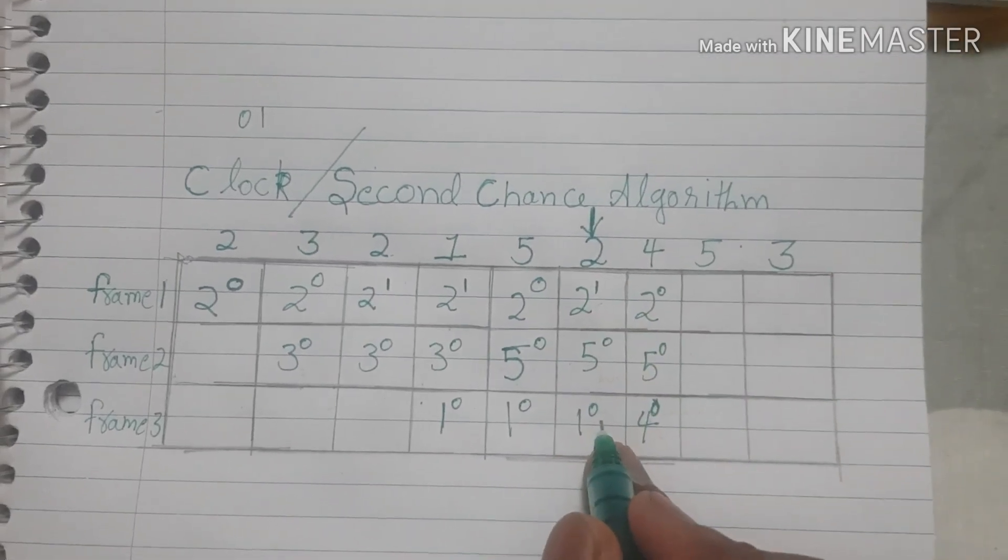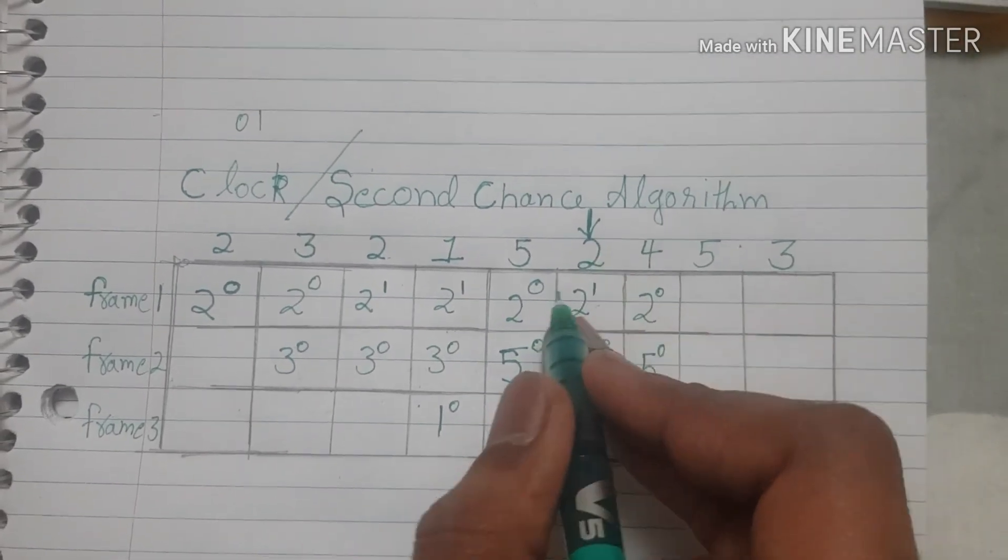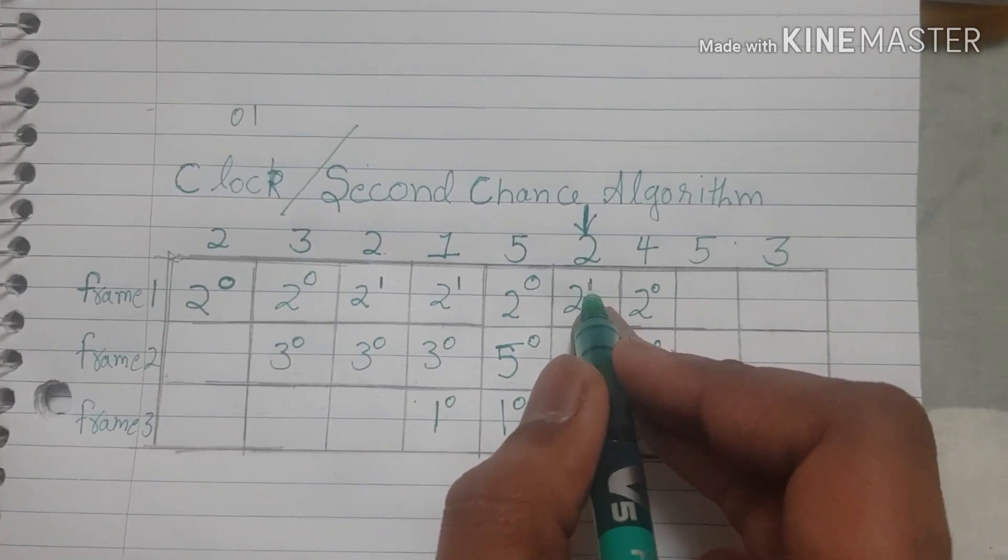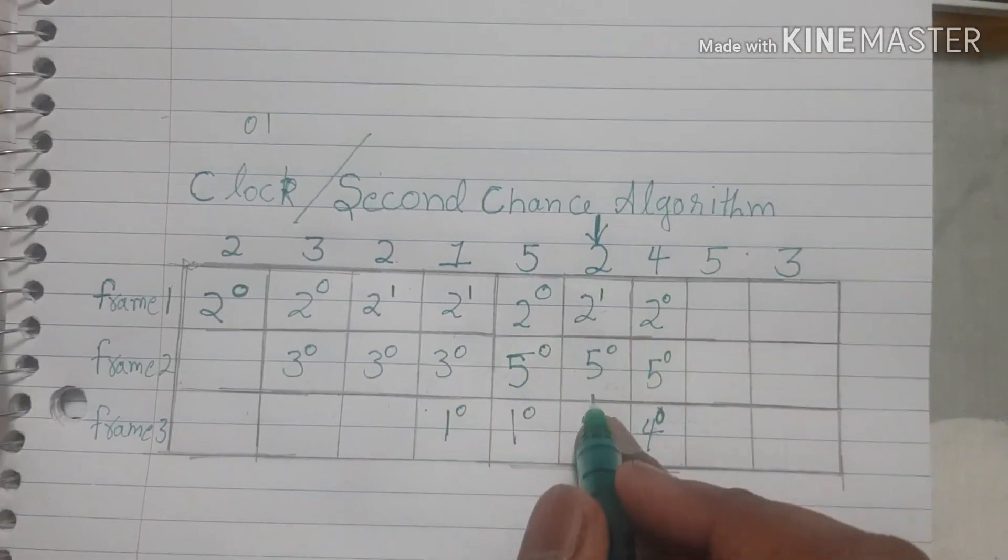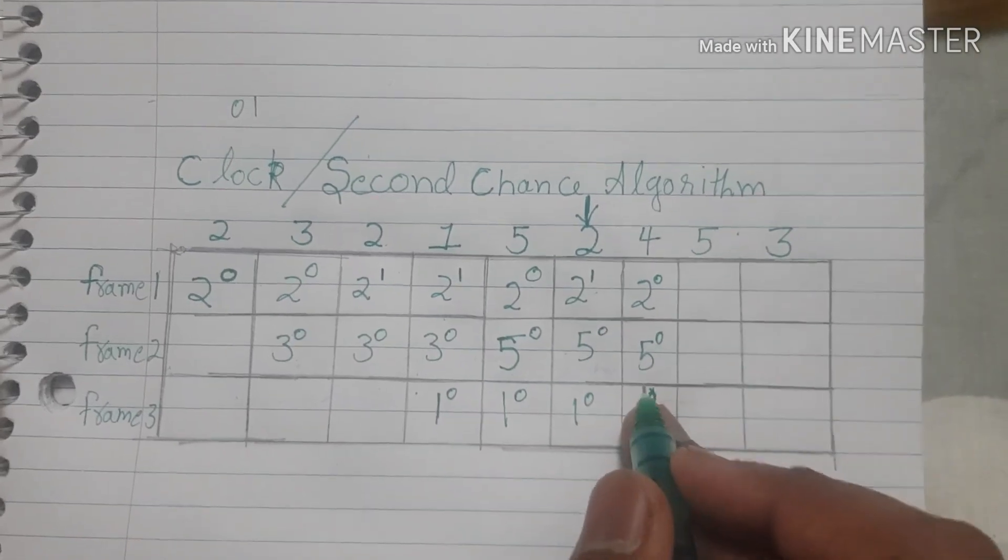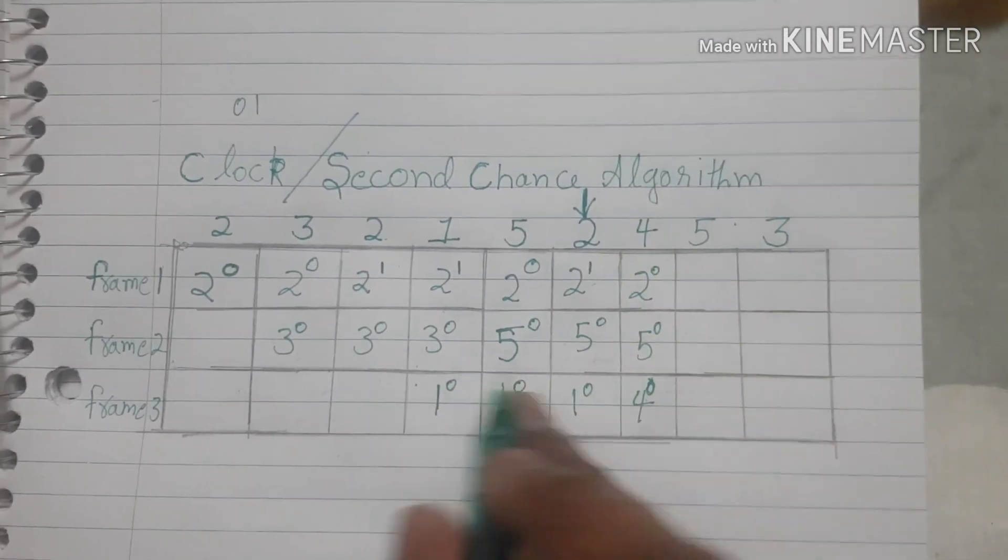We didn't change it here because we had 2, so we could increment it to 1 and we didn't change it to 0. But since we had a page fault here again, we had to turn it 0 for every other one.